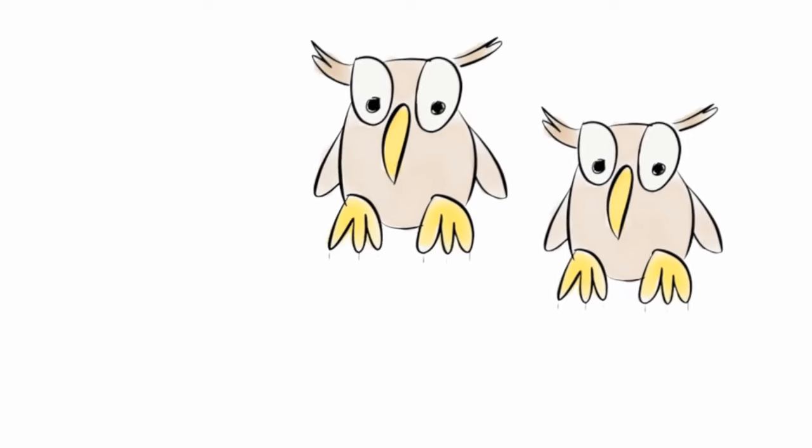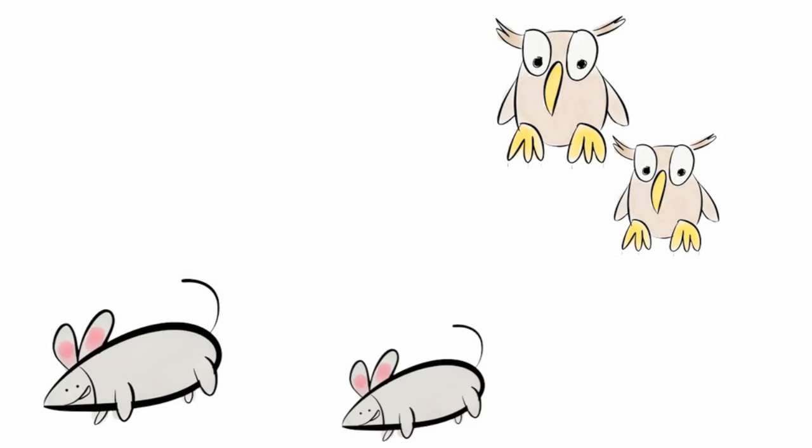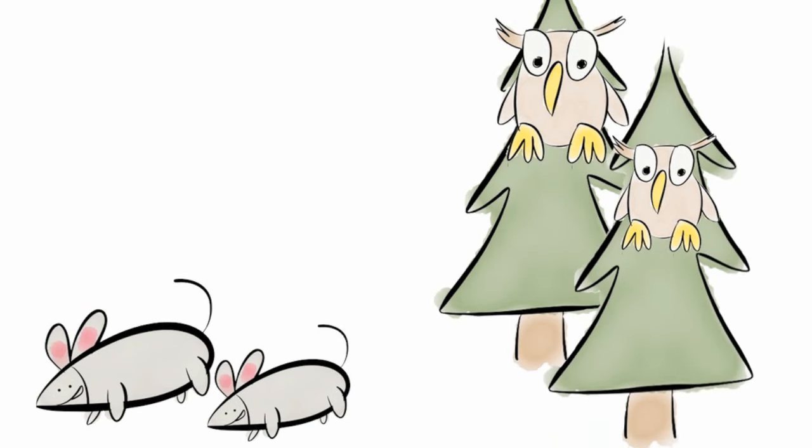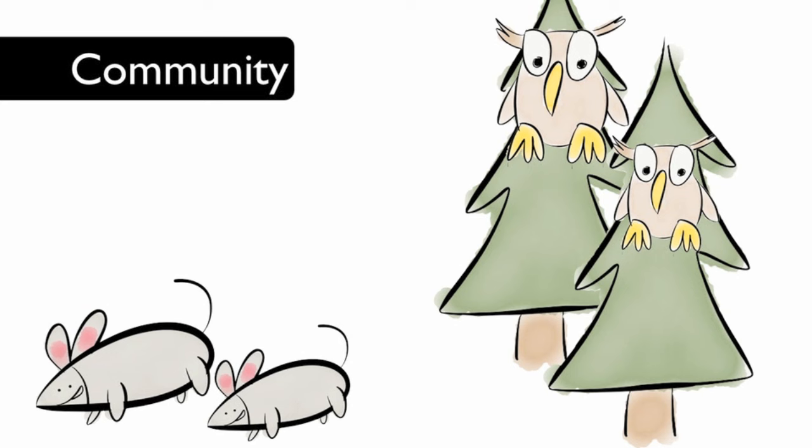Sometimes different populations live in the same area. For example, there could be a population of mice and a population of pine trees. Many populations in the same area are called a community.